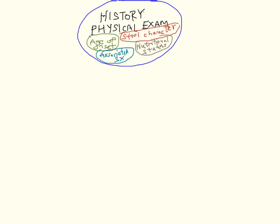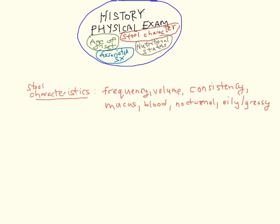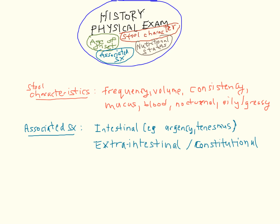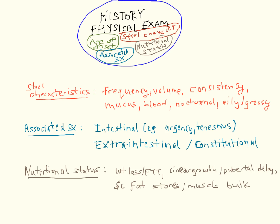Three other features can help classify the diarrheal phenotype: stool characteristics, associated symptoms — whether intestinal, extra-intestinal, or constitutional — and the last important one being nutritional status. Also in history, ask if the onset was associated with a recent infection or illness, antibiotic use, or additions or changes to the diet or medications. Family history is always important, and a detailed physical examination is needed, including a perianal inspection.